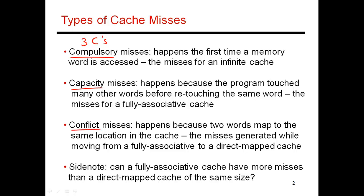A compulsory miss occurs because of how programs and caches behave — the program makes a request for data, those are brought into the cache, and then hopefully some data is retained so that when you touch it again, those end up being cache hits. Even if I used an infinitely sized cache, I'm still going to have some misses early in the program, because the first time I touch data, it is unlikely to be in cache. Things have to first be brought into cache before you can enjoy subsequent cache hits.